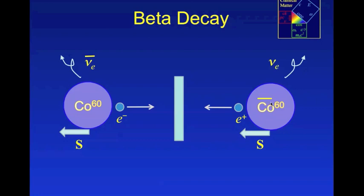If we were able to construct a nucleus of anti-cobalt, it would in fact decay by emitting a positron parallel to the nuclear spin, and it would emit a left-handed neutrino.